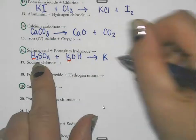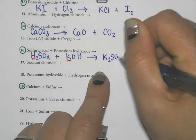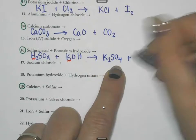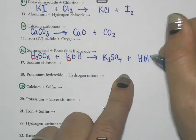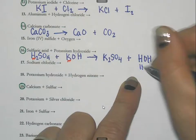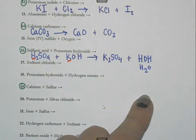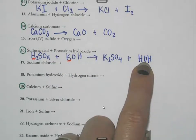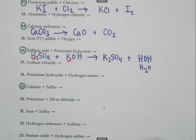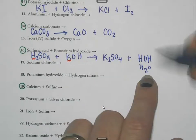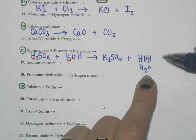K is going with SO4 — SO4 has a charge of negative 2 and K is plus 1, so that makes K2SO4. Then H and OH combine to make HOH, which you can recognize as H2O. This comes in handy for net ionic equations or when studying acids and bases.